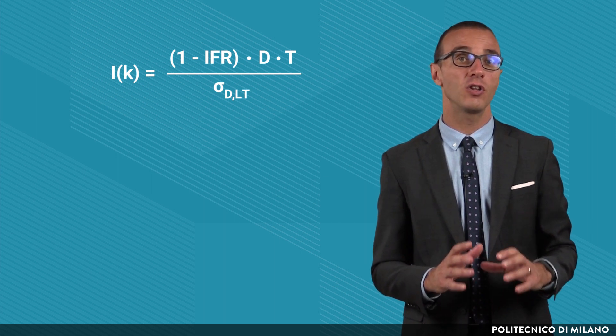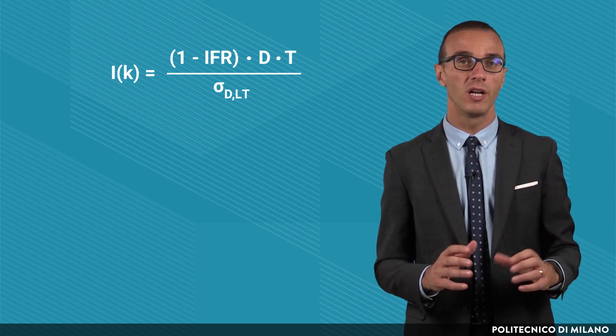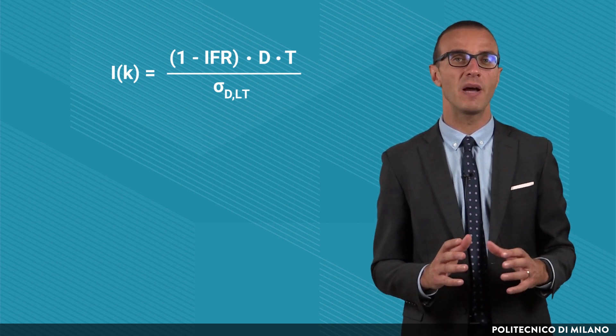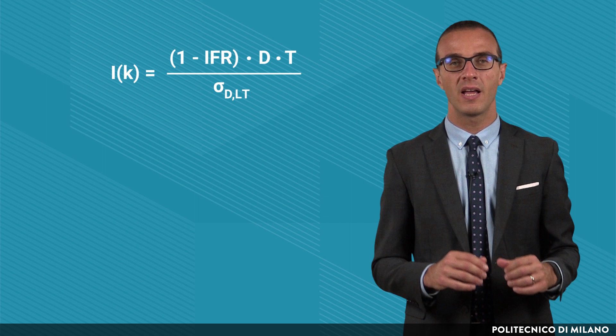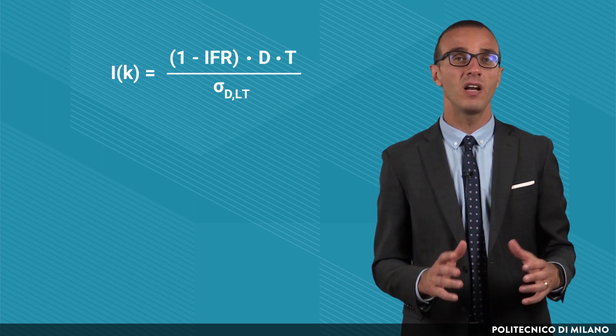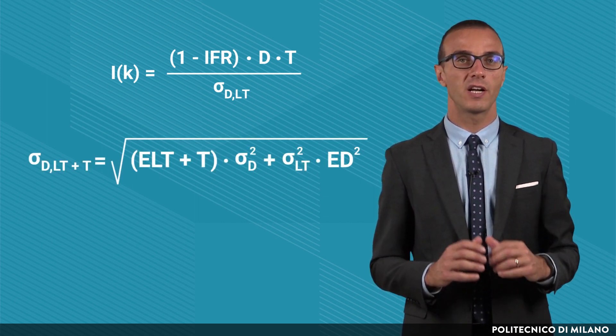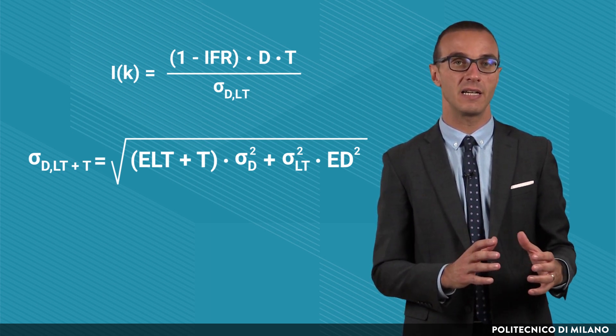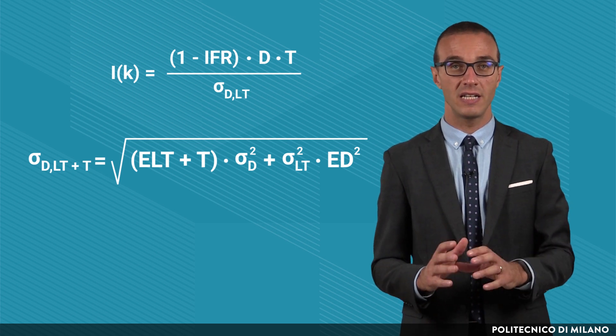The example we have just seen refers to the reorder point model. What happens if we instead consider the periodic review model? There are two differences. First, the quantity to be considered is not Q or EOQ anymore, but it is the average order quantity given by the product between the expected demand in a certain period and the order interval of T periods. Second, the composite standard deviation has to consider not only the replenishment lead time, but also the time interval T.